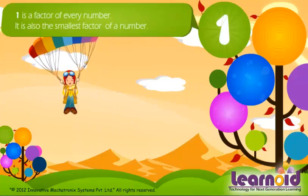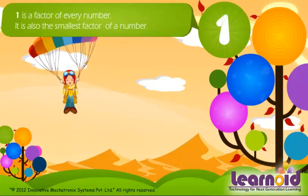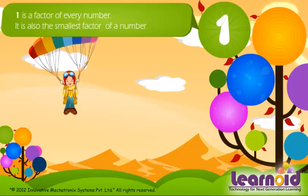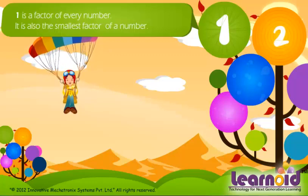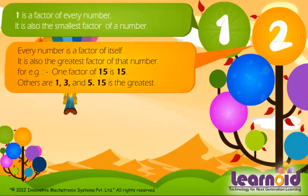One is a factor of every number. It is also the smallest factor of a number. Every number is a factor of itself. It is also the greatest factor of that number.